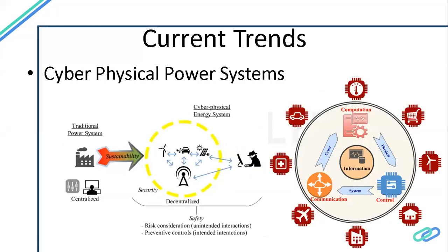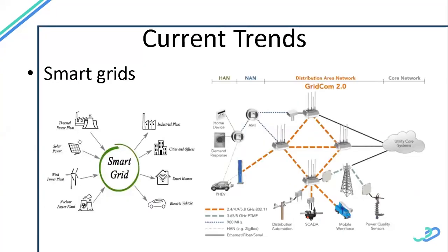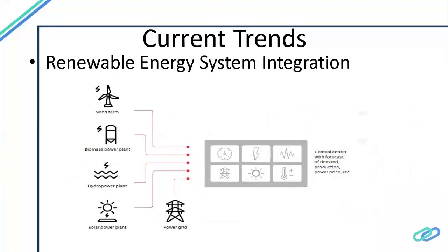This is an outcome of cyber-physical energy systems and power systems. One of the key methods is renewable energy integration — most researchers are currently working on algorithms for how to efficiently integrate renewable sources. For example, some algorithms are already developed so that even a single unit of power produced can be integrated with the grid.